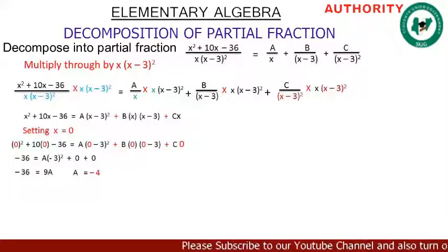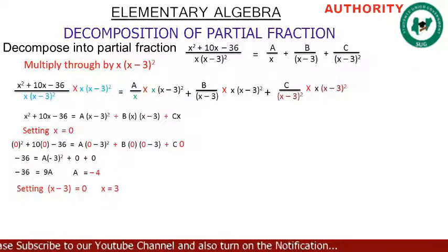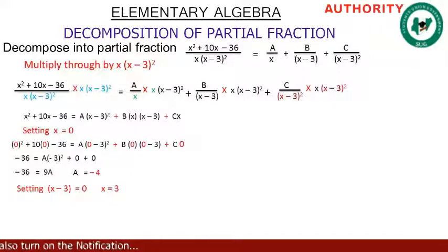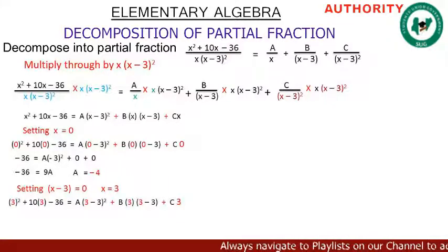Now let's also set the other factor equal to zero. Setting x minus 3 equal to 0, we get x equals 3. Replacing x with 3 everywhere in our expression, we get: 3 squared plus 10 times 3 minus 36 equals A times (3 minus 3) squared plus B times 3 times (3 minus 3) plus C times 3.